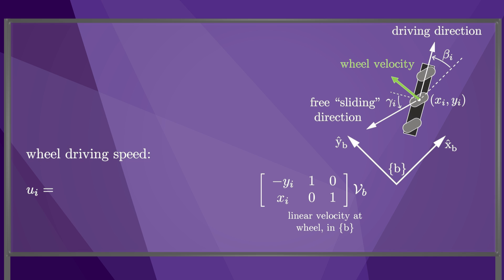This linear velocity is derived from the body twist vB, and it depends on the position of the wheel in the B frame. We then transform this linear velocity to a frame fixed to the wheel. This linear velocity is the vector sum of the driving velocity and the free sliding velocity.